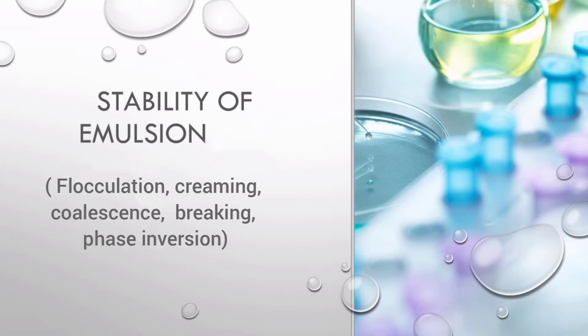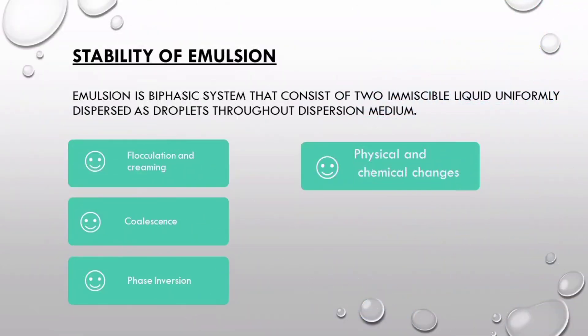The topic of this video is stability of emulsion. An emulsion is a biphasic system, which means it has two phases: dispersed phase and dispersion medium. The dispersed phase is in small quantity and dispersion medium is in larger quantity. It consists of two immiscible liquids, and the dispersed phase is dispersed uniformly throughout the dispersion medium.